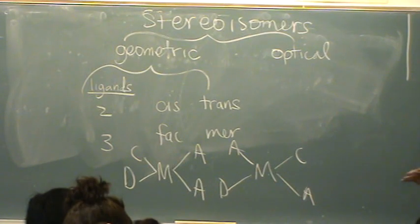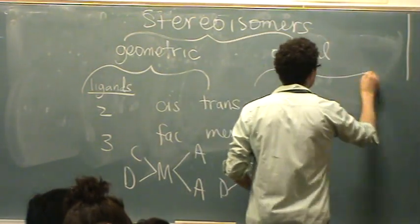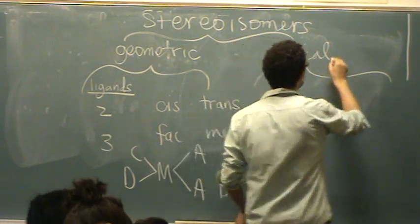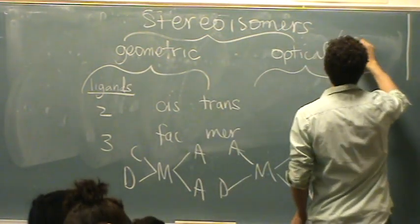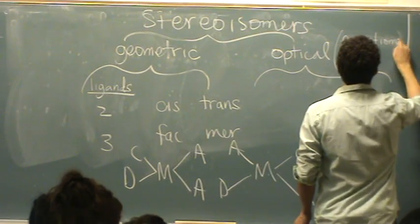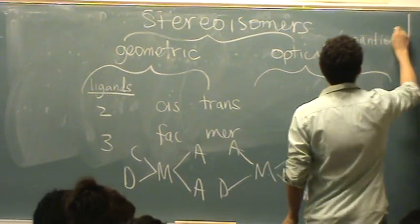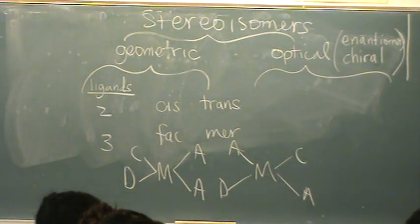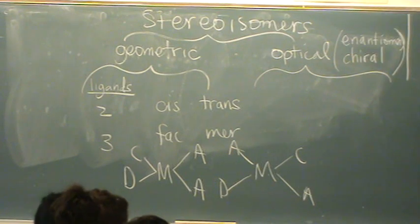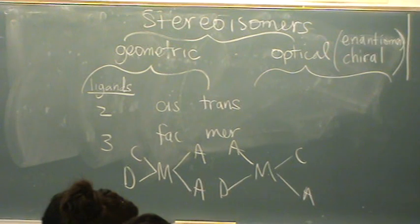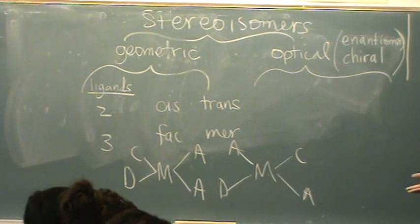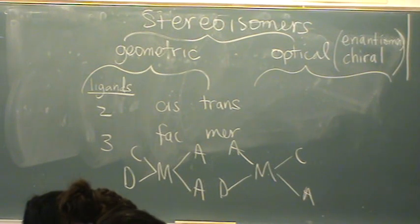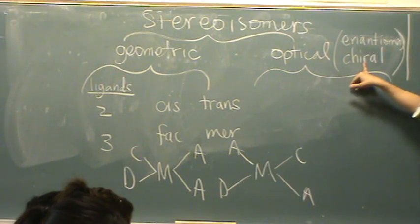Okay, the optical is different than that. The optical is where, oh and synonyms for optical are like enantiomers or chiral. Those all have equivalent names. Optical and enantiomers refers to two things. For example, you and your sibling are like sisters. So two. You say sisters when referring to two things.